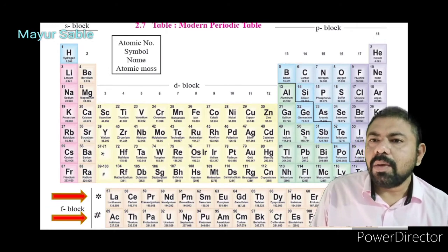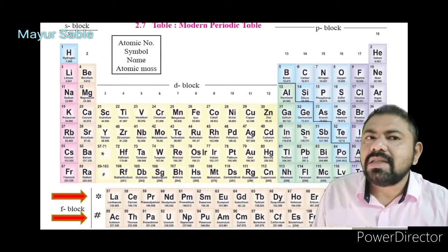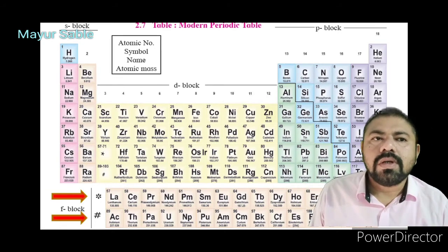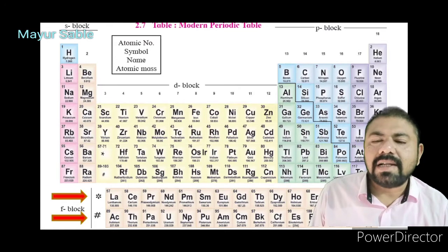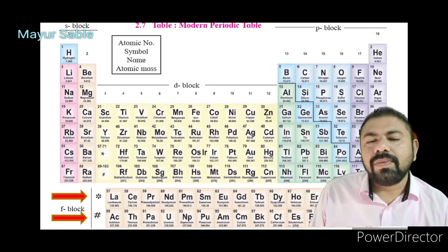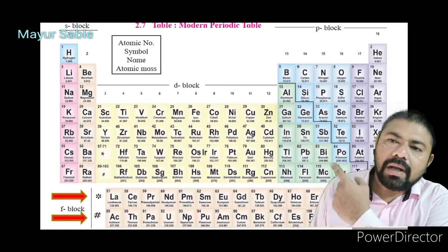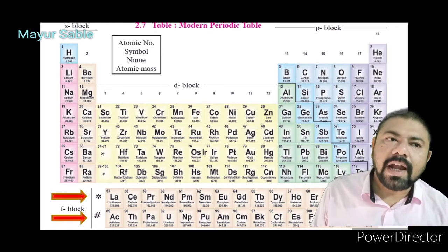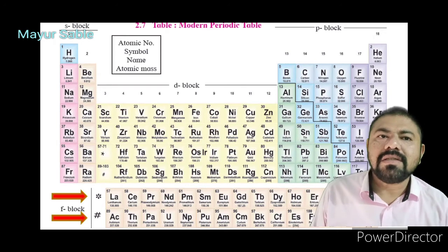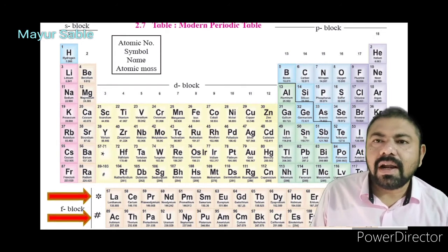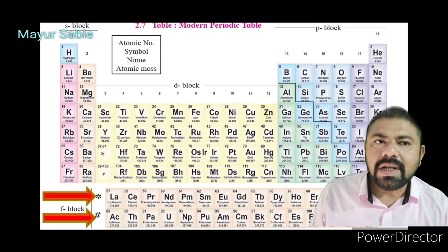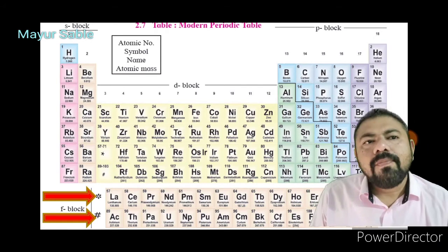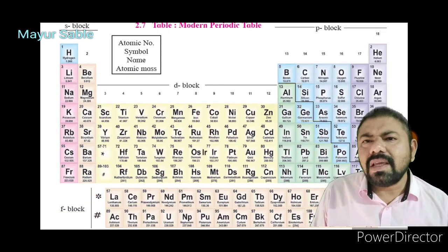Apart from the main table, two rows are shown separately below the periodic table — these are called the lanthanide series and the actinide series respectively. In total, the modern periodic table has 118 boxes, meaning there are 118 places for elements.